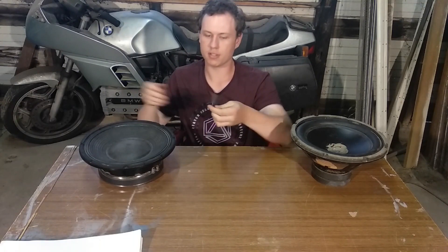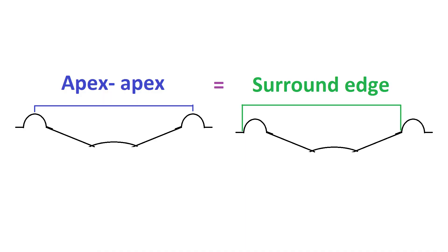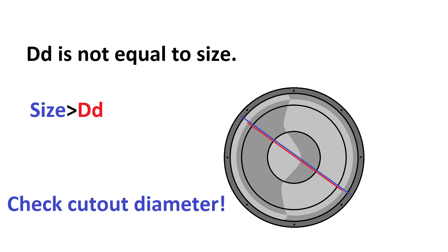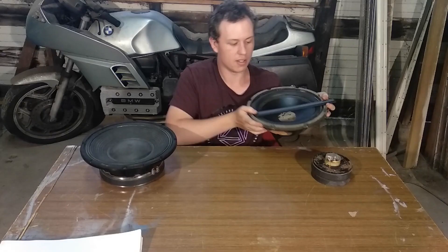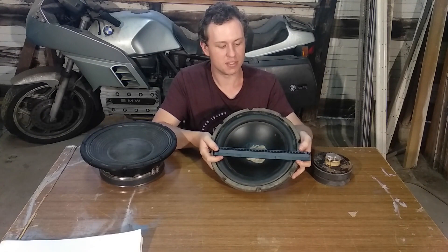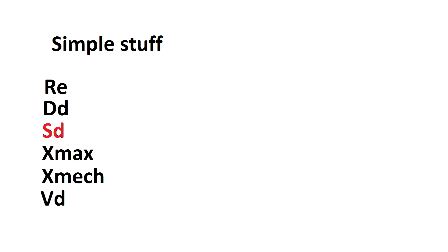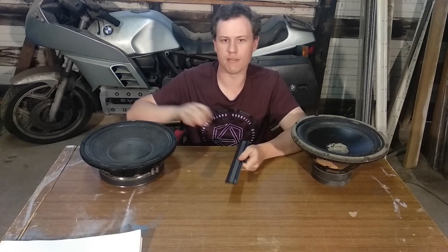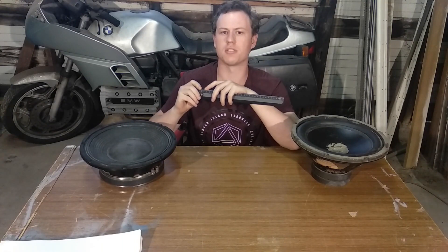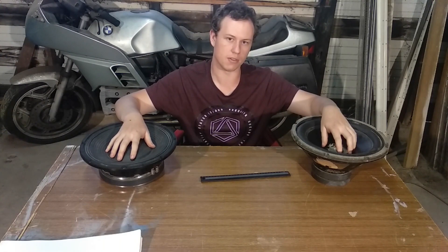Next we have DD, or driver diameter — simply the diameter of the driver's cone. For this speaker you'd usually measure it apex to apex. This one would be about 24.5 centimeters, or just slightly under 10 inches of driver diameter. SD is based on driver diameter and is the surface area of the driver, usually taken in square centimeters. A square centimeter is about a sixth of a square inch.